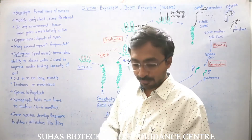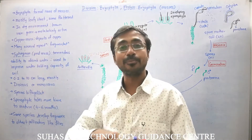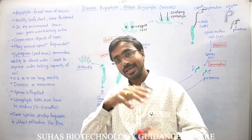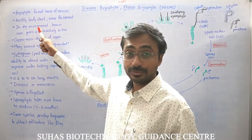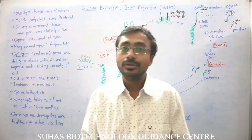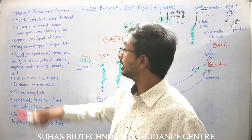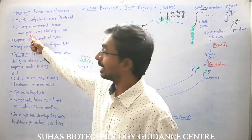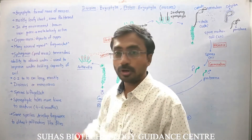Bryophyta is the formal name for mosses. Mostly they have a leafy type of shoot, but some are flattened as well — similar to Riccia or Marchantia. In the dry environment, since bryophytes are moisture- and shade-loving plants, some mosses adjust themselves to dry conditions but become brown and are not metabolically very active. As soon as rain starts again, they become green and metabolically active once more.